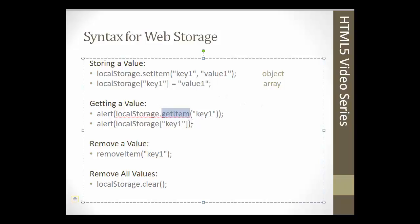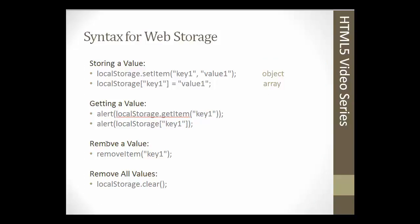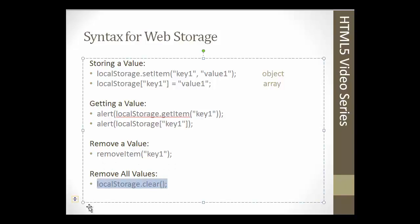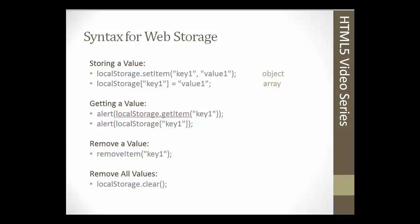Getting a value is as simple as using the getItem method with the key — this would give us an alert with the value stored under that key. Removing a value is extremely easy using the removeItem function. You can also use a single line of code to remove all storage objects at once, clearing everything.